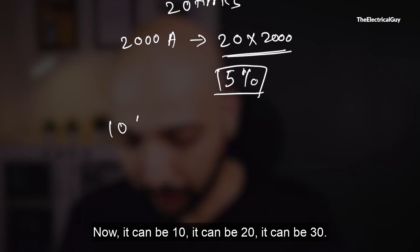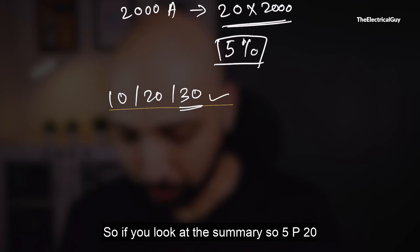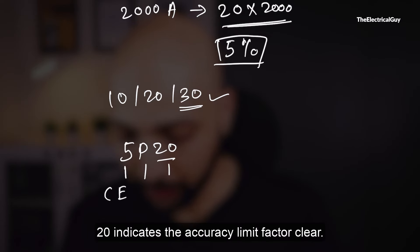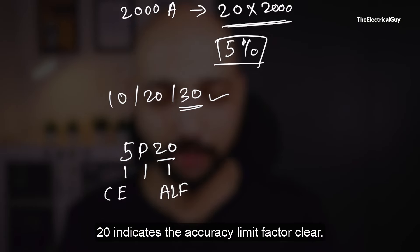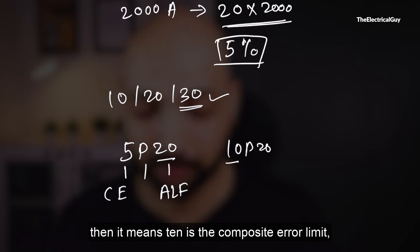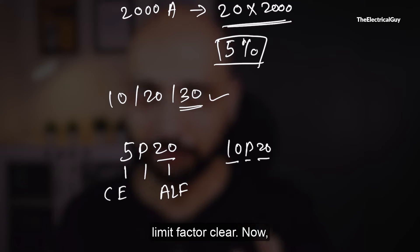The ALF can be 10, 20, or 30. A value of 30 is on the extreme side, and of course a higher ALF increases the cost of the current transformer. So to summarize: in 5P20, the 5 indicates composite error, P stands for protection, and 20 indicates the accuracy limit factor. Similarly, 10P20 means 10% composite error limit, P for protection, and 20 as the accuracy limit factor.